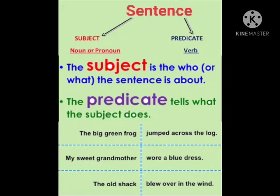For more clarification, see the examples. In the first sentence: 'The big green frog jumped across the log.' In this sentence, about whom we are talking — the sentence is telling about the big green frog. So, the big green frog is the subject. Then 'jumped across the log' is the predicate, because it tells us what the subject — the big green frog — is doing.